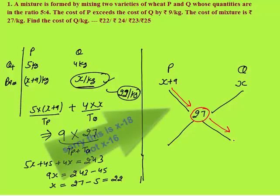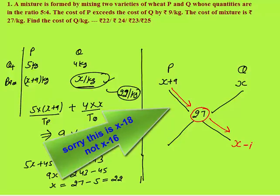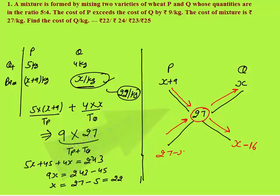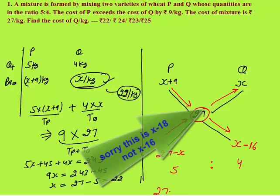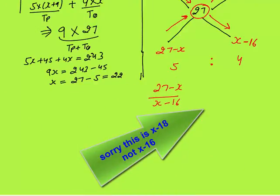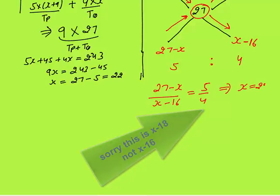Subtract diagonally: X plus 9 minus 27 gives X minus 16. Now 27 and X — 27 is the larger value, so subtract X from 27, giving 27 minus X. Here comes the ratio: this is the ratio of P and Q, and we know P and Q are mixed in the ratio 5 is to 4. So this ratio is 5 is to 4. You can calculate: (27 minus X) divided by (X minus 16) equals 5 is to 4. Solving this, you will get the value of X as 22 per kg — the same answer.